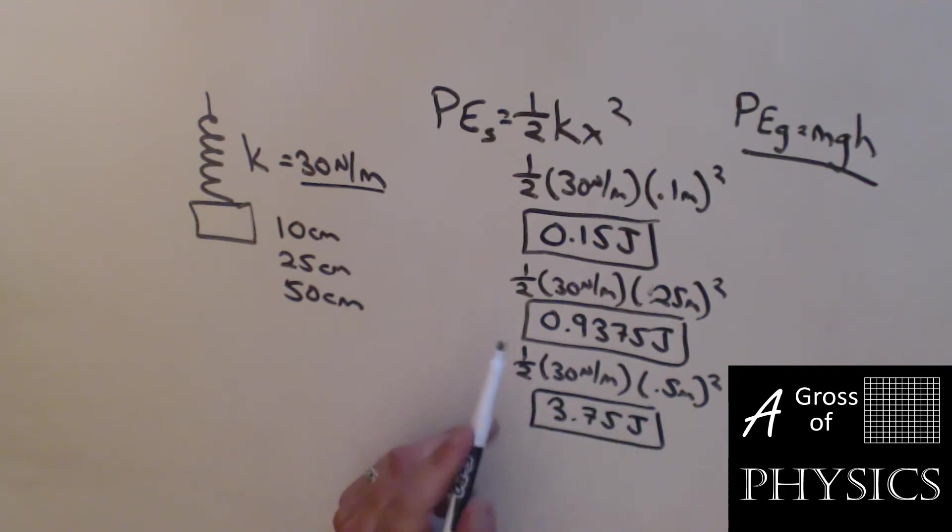Now, as you can see, as we move farther and farther along the stretch, we're increasing our value in a direct square relationship because each one of these distances, or elongations in this case, have a square. So it's not a linear relationship, but a squared relationship in terms of the energy for each of the elongations.